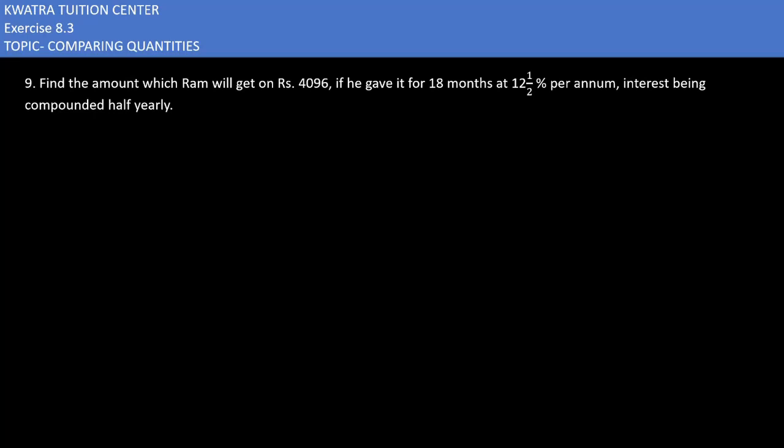Let's start with the ninth one. It says find the amount which Ram will get on rupees 4096 if he gave it for 18 months at 12½% per annum interest being compounded half yearly. So here it said half yearly, you have to use your formula so that you can get the answer.